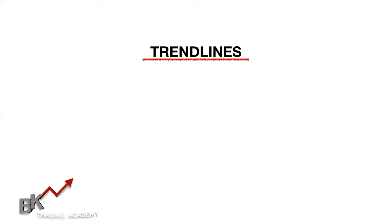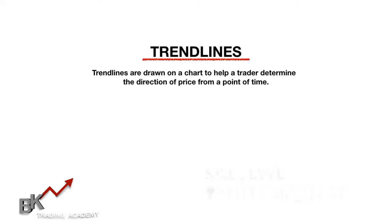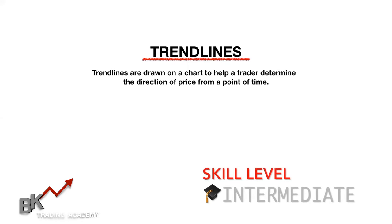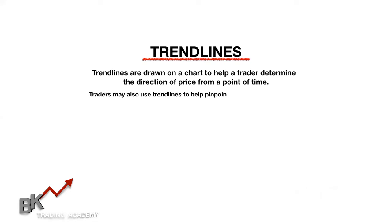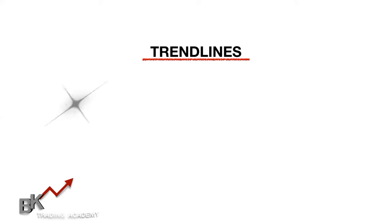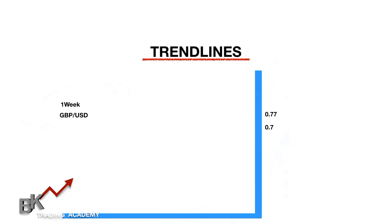Trend lines are drawn on the chart to help a trader determine the direction of price from a point in time. Traders may also use trend lines to help pinpoint buying or selling areas. We're looking at the weekly chart of GBP/USD. On the right side is the price and at the bottom are the months — it's just a graph telling you where price is at, where it's going, and where it's been.